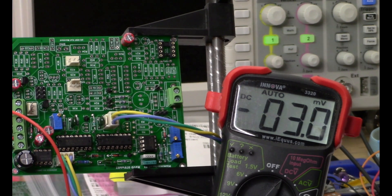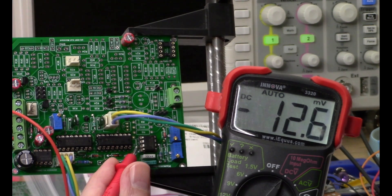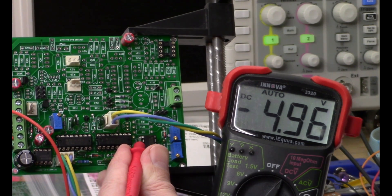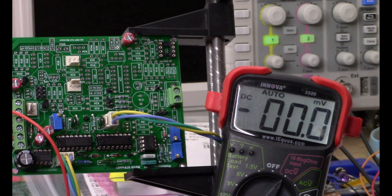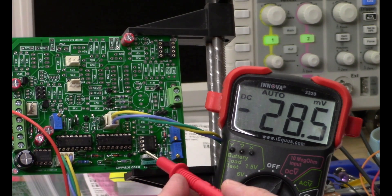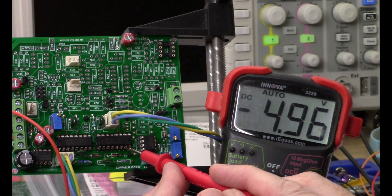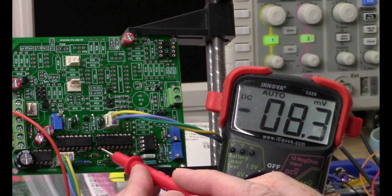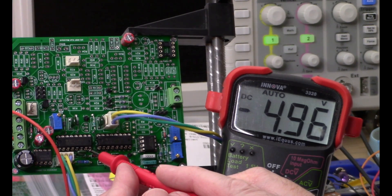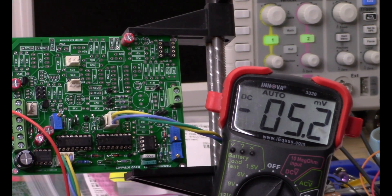So on the 555 on pin one we should have approximately minus five volts, and we have minus 4.95. And on IC11 and IC12 pin eight we should have negative five, so we have minus 4.96 and minus 4.966.